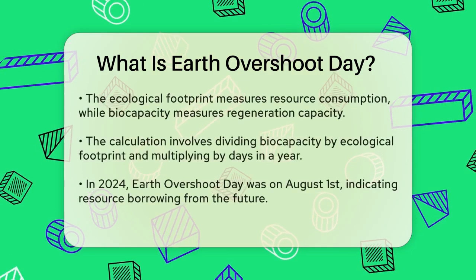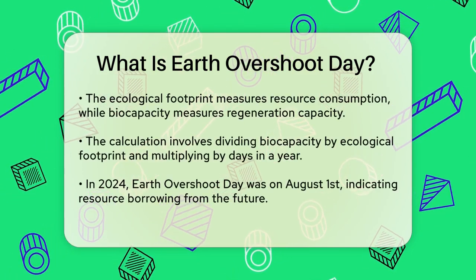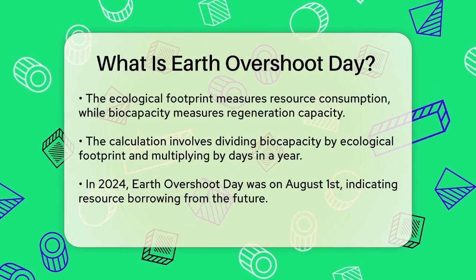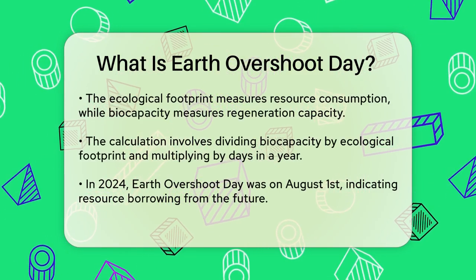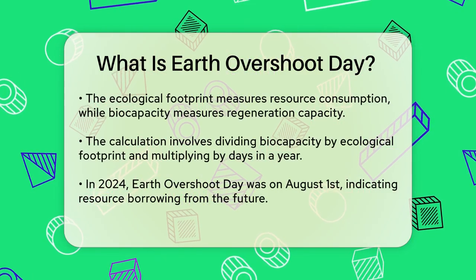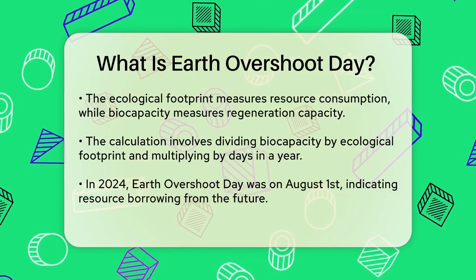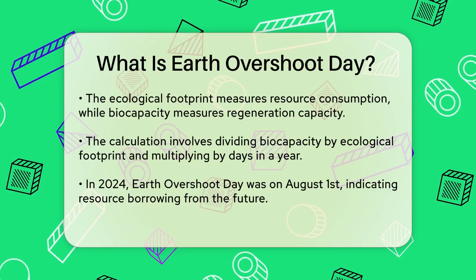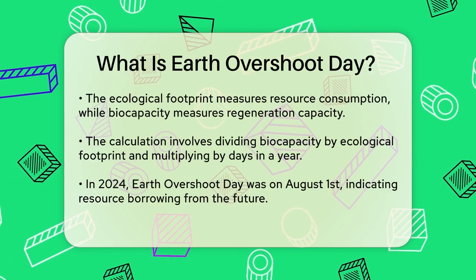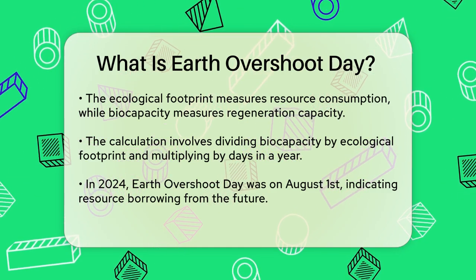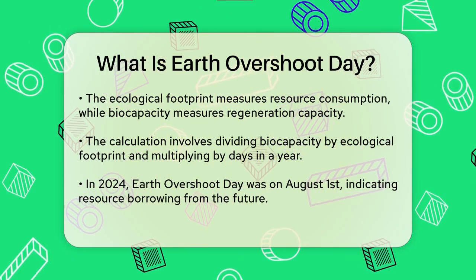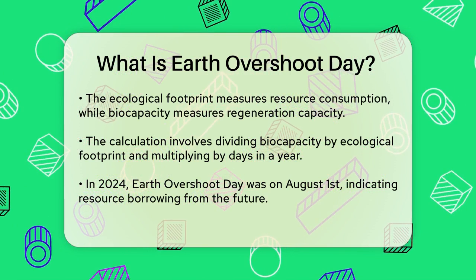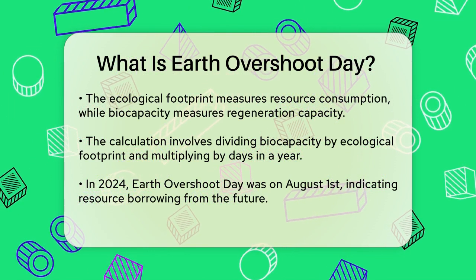This date is calculated by the Global Footprint Network, an organization that tracks how much we consume versus how much the Earth can produce. They use something called the ecological footprint, which measures how much of the Earth's resources we use, and biocapacity, which is the amount of resources the Earth can regenerate. By dividing the Earth's biocapacity by our ecological footprint and then multiplying by the number of days in a year, they determine the exact date when we go into ecological deficit.